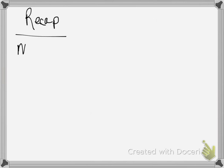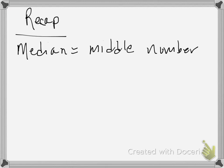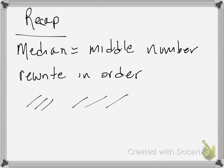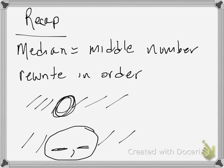A little recap: median is the middle number. We find it by first rewriting the data set in order. If there is an odd number of items, you can just cross off from the outside and you'll be left with one number in the center.